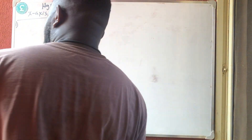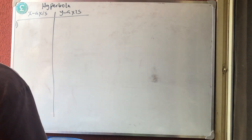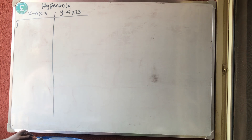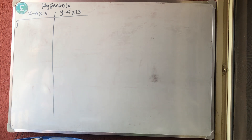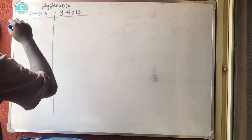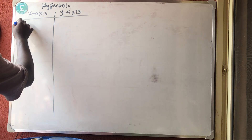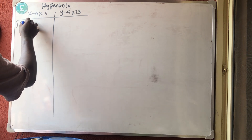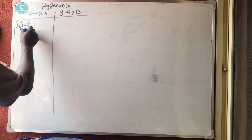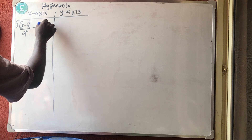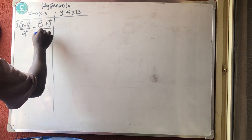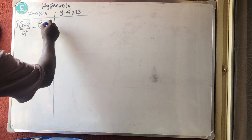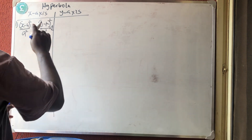Good afternoon and welcome to Master Talker online class. This is the continuation of the hyperbola. I'm going to give you the formulas for hyperbola. If you know the formulas for ellipse, it's the same thing as hyperbola — just a few things you need to change. For the hyperbola facing the x-axis, x will be positive: (x - h)² / a² minus (y - k)² / b² = 1.